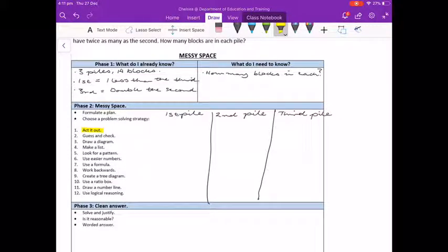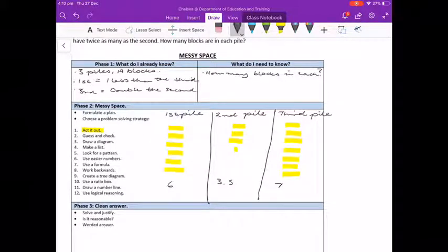The first pile is going to have one less than the third. Let's try six in the first pile, which means the third pile would have seven. Remember there are 14 blocks altogether. The second pile has to be half the size of the third. Half of seven is three and a half. So we've got six, three and a half, and seven, which gives us a total of 16 and a half. We're quite off here.